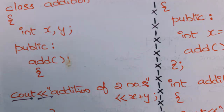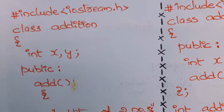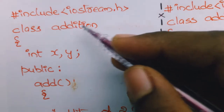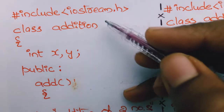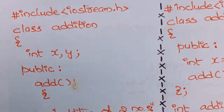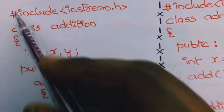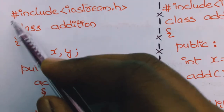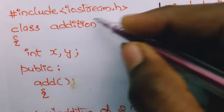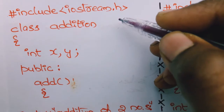First you need to include the header file: #include <iostream.h>. This is nothing but a preprocessor directive. It tells the preprocessor to include the header file iostream.h.